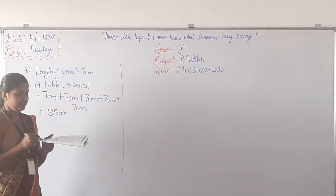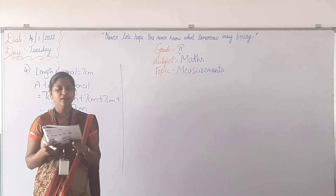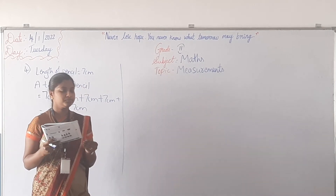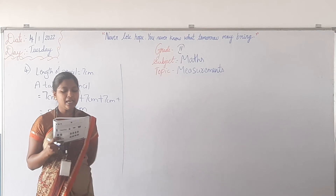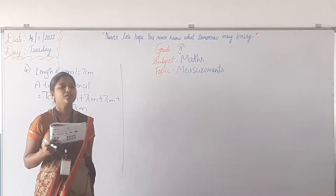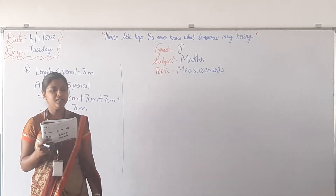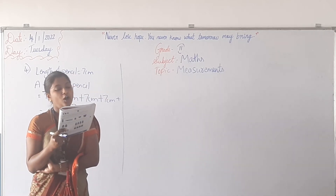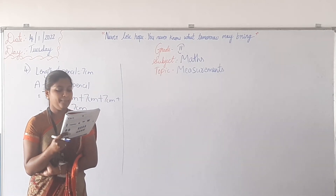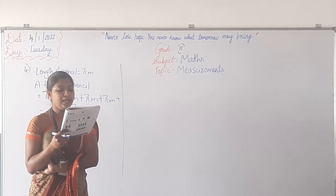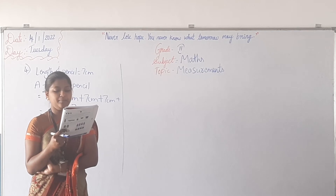See the fifth question — listen carefully, don't write. A pencil is 2 cm longer than a pen. The pen is 3 cm shorter than a marker. If the length of the marker is 12 cm, then see the fifth question carefully.